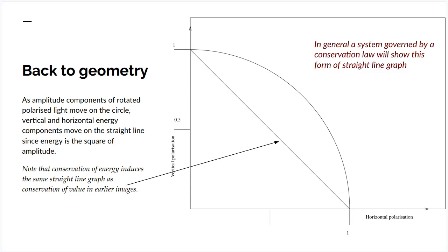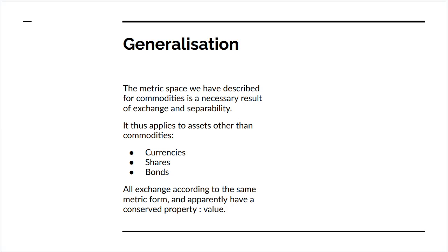Now, nowadays you might invoke a more recent theorist, but he invoked Lucretius. The generalization of this is that we've said the metric space of commodities has its form as a necessary result of exchange and separability. But this applies to bundles of other assets, not just commodities. Things which are not genuinely commodities made by labour. For example, currencies, shares and bonds, which are purely legal titles. All of these exchange according to the same metric form.